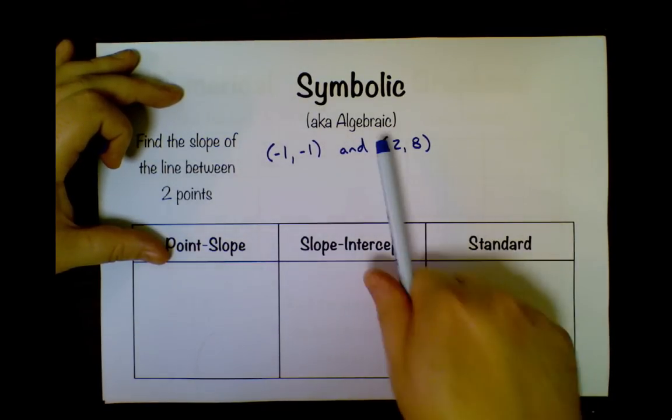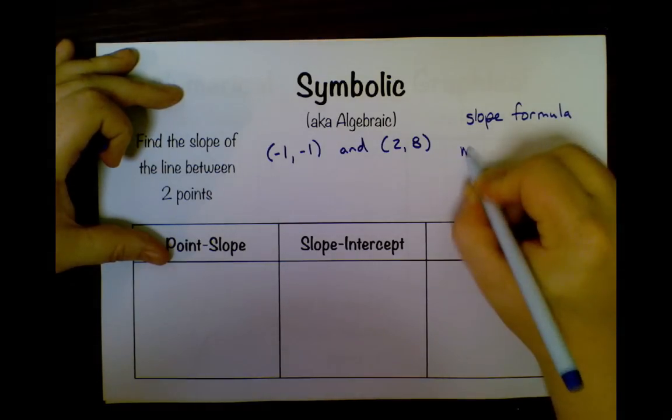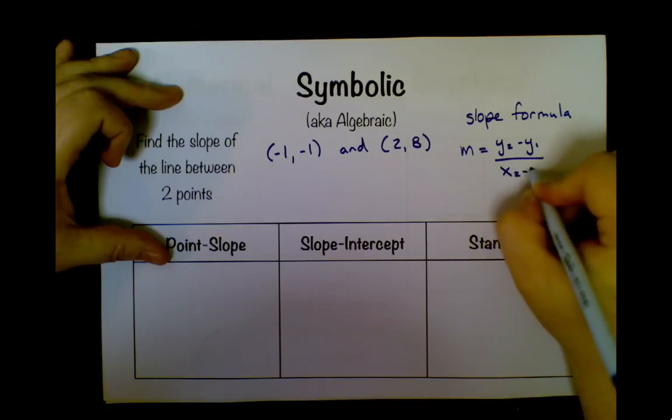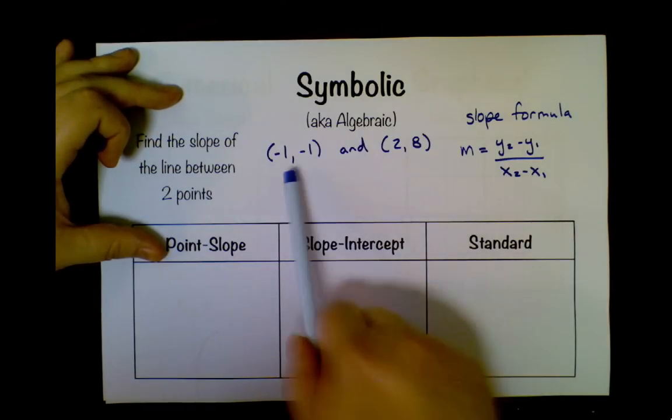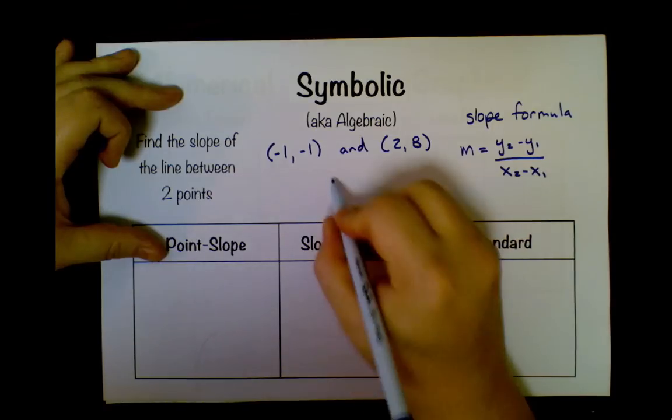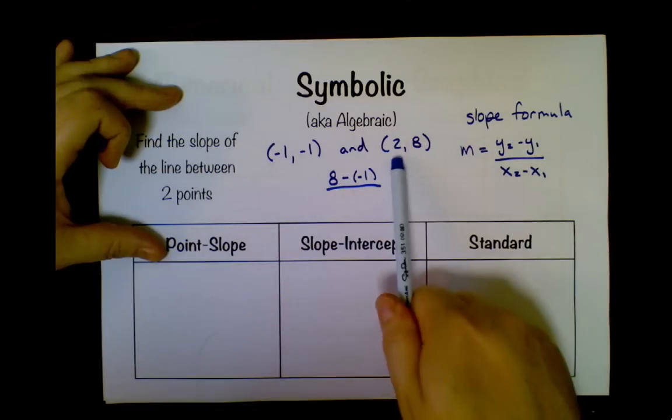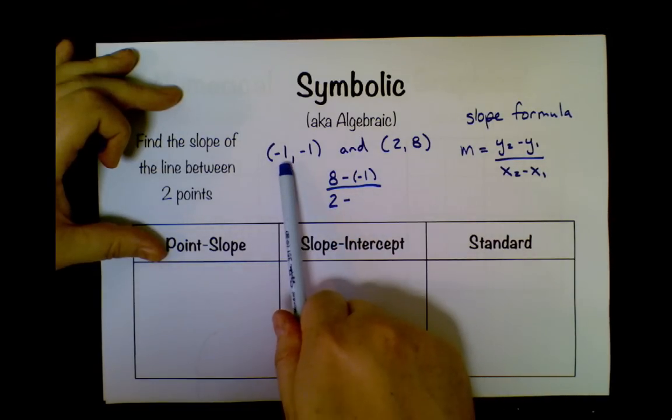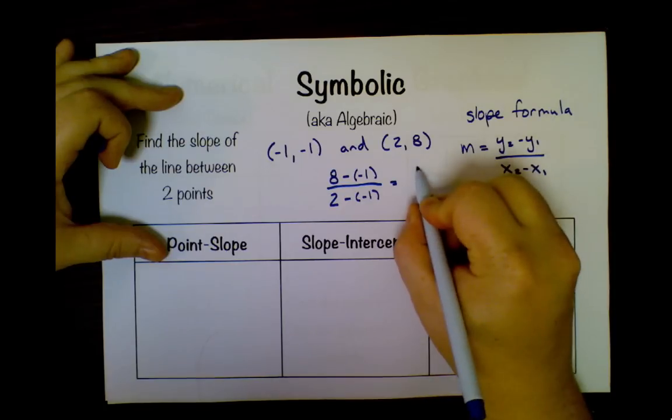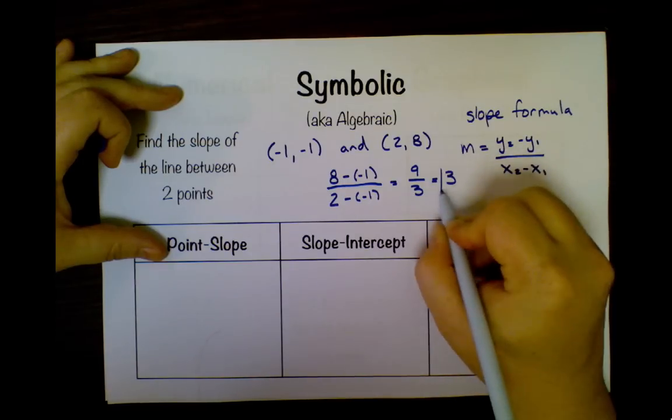If I am working symbolically, I'll probably use the slope formula. That says that the slope is equal to y2 minus y1 over x2 minus x1. It doesn't actually matter which is point one and which is point two. Just for convenience, I'm going to call this point two and this point one. My second y-coordinate is 8, my first y-coordinate is -1. My second x-coordinate is 2, and my first x-coordinate is -1. Eight minus negative one, eight plus one is nine. Two minus negative one, two plus one is three. Nine over three equals three. That's my slope.